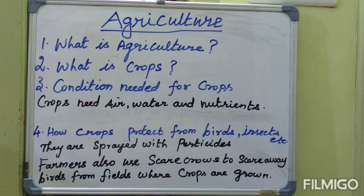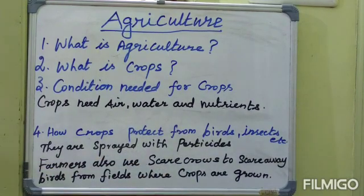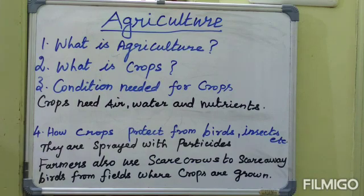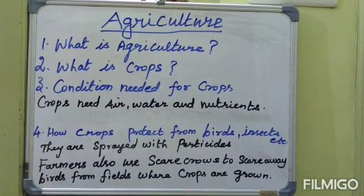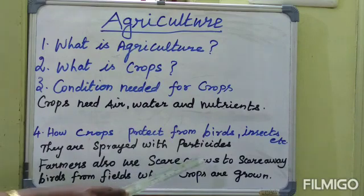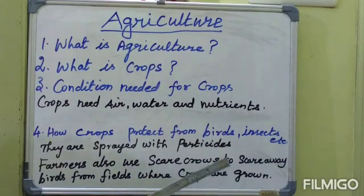How are crops protected from birds, insects, rats, and other pests? Crops need protection from birds, insects, rats and pests before and after harvesting. They are sprayed with pesticides to protect them from pests and other harmful animals. Farmers also use scarecrows to scare away birds from fields where crops are grown.